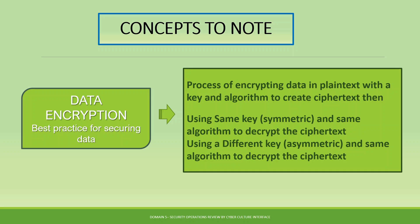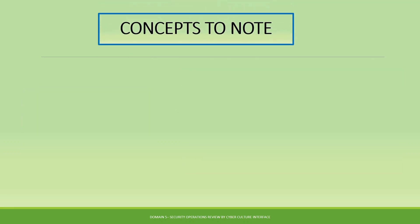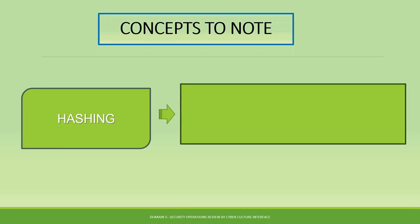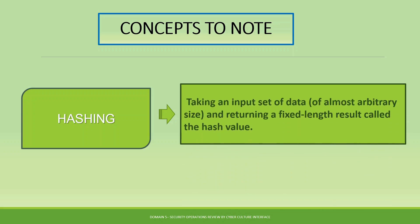Another key concept is hashing. Hashing takes an input or a set of arbitrary data, encodes it or combines it with a text or data, and produces a fixed-length result called a hash value. If you have a document and you apply a code or algorithm to it, the result you get is called a hash value.